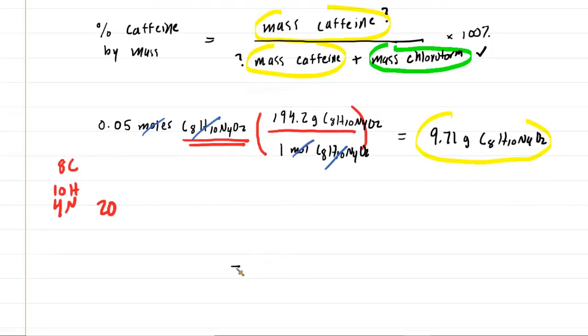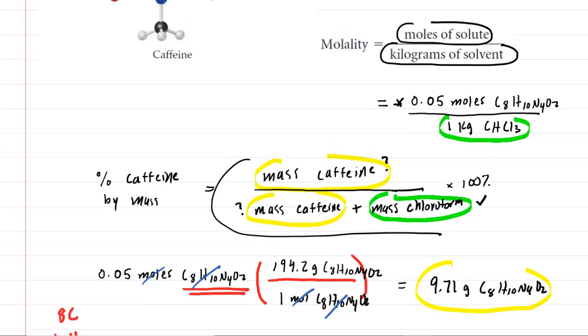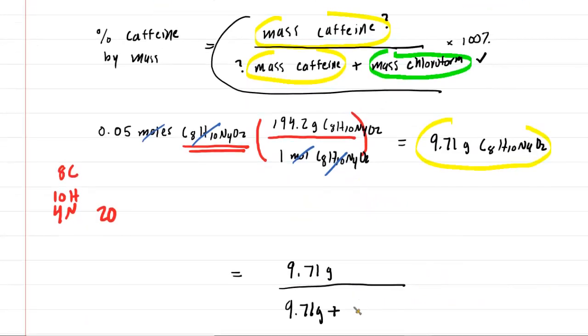We're going to do the percent by mass of caffeine again by plugging into this formula here. The mass of caffeine was 9.71 grams over the mass of caffeine plus the mass of chloroform. Remember, the mass of chloroform was the 1 kilogram. That's the same thing as 1,000 grams. So you should make sure you use 1,000 grams there. And then we'll multiply that by 100.